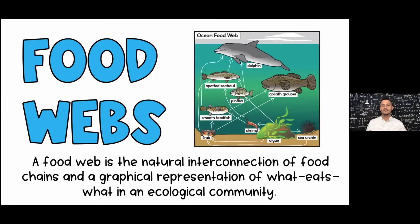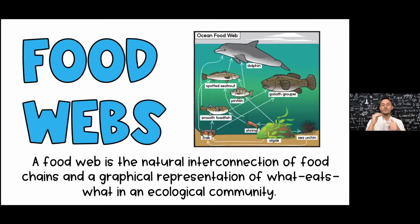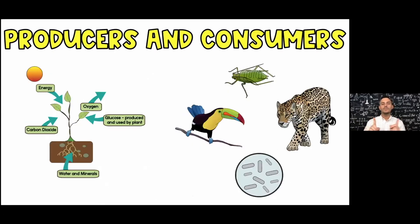Here we have an ocean food web. This ocean food web is a little more complicated than that food chain we saw, but we're going to break down all the different things we're seeing in this graphic. Then we'll be able to interpret every single scenario here. We've got to start with: what are producers and consumers?